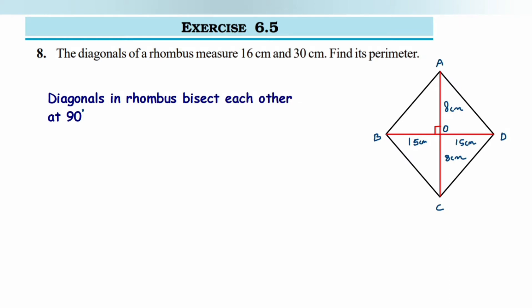The entire AC will be 16 centimeter, then AO and OC will become 8 centimeter and 8 centimeter, half of 16 because they are bisecting. Similarly BD is 30 centimeter, then BO and OD will be 15 centimeter each. Now I'm going to apply Pythagorean theorem.